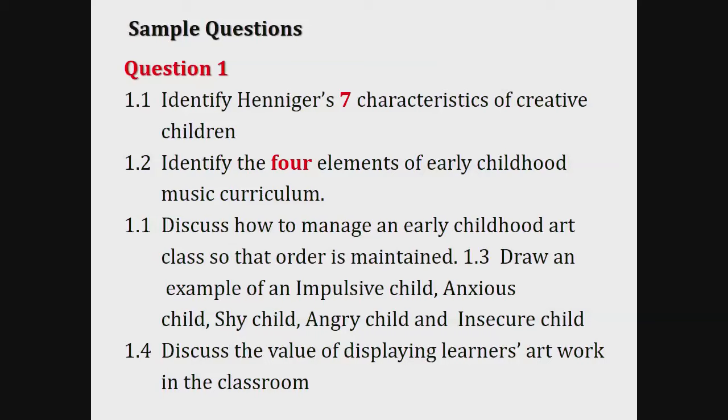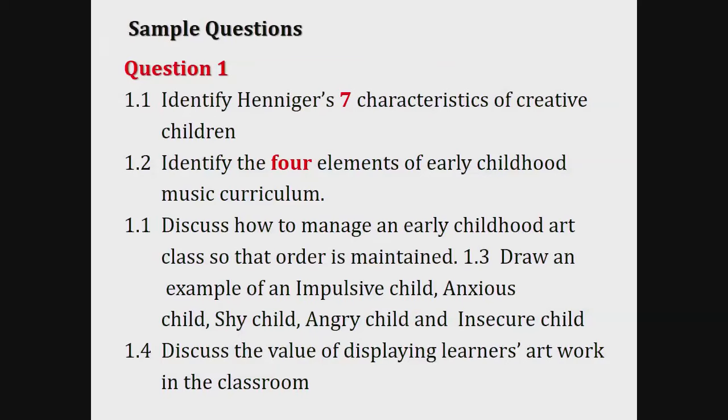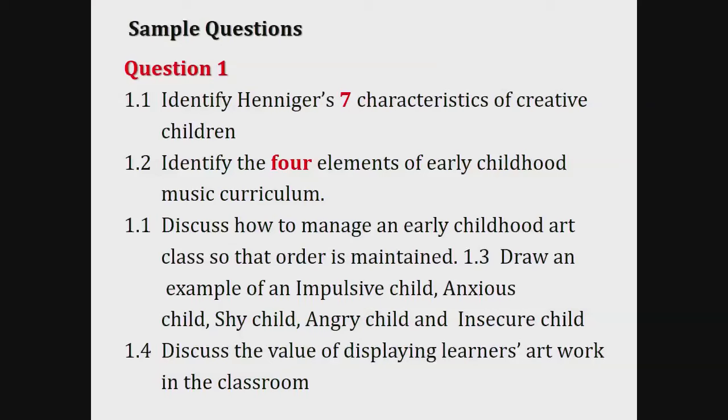We are now looking at sample questions. For example, question 1 with its subsections. Question 1.1: identify Henneke's seven characteristics of creative children — the seven is highlighted, meaning not more than seven. To achieve full seven marks, you cannot write less than seven either. Question 1.2: identify the four elements of early childhood music curriculum. You just have to identify the four elements — please do not go into explaining what each element means, just identify the four.